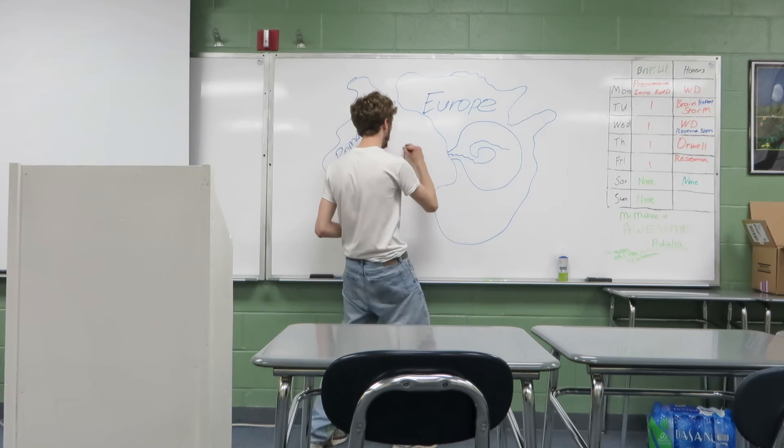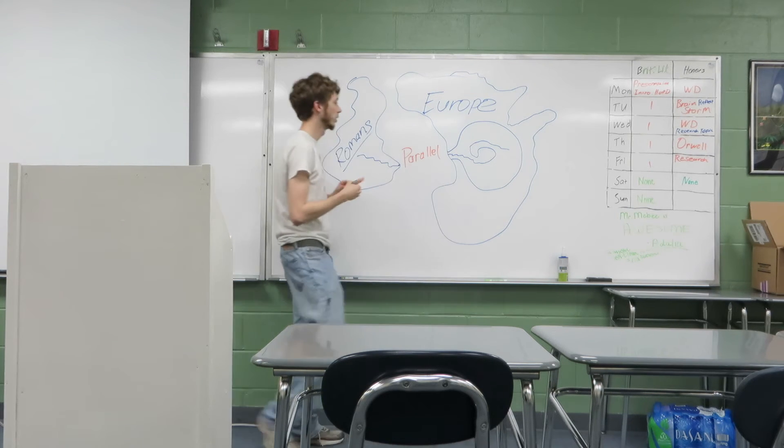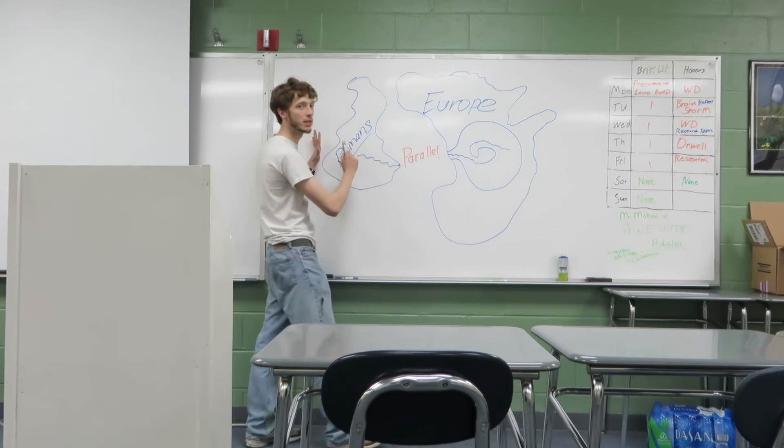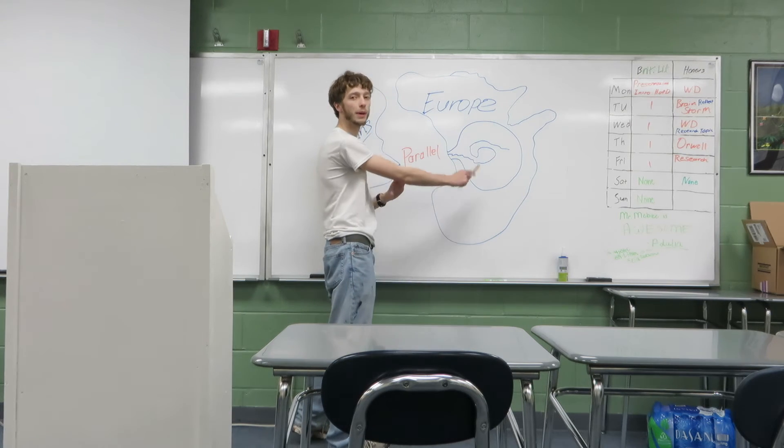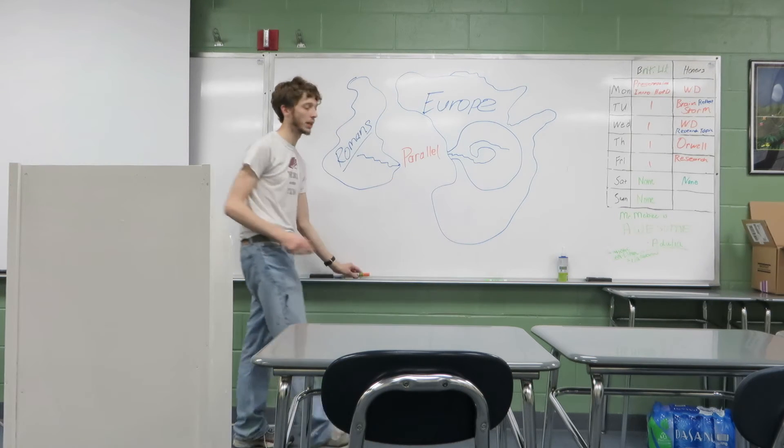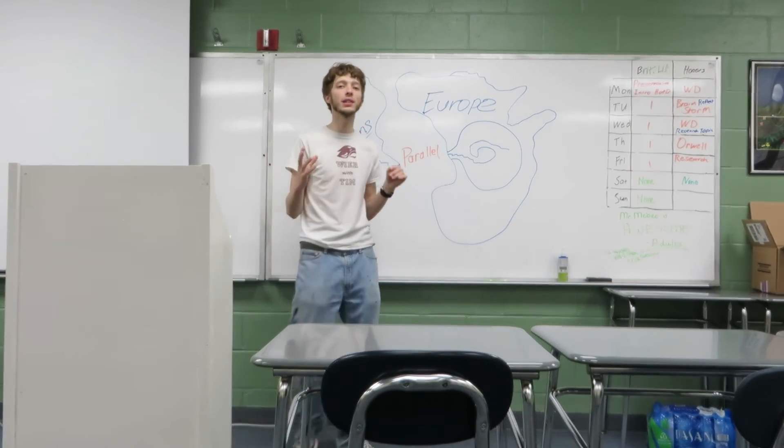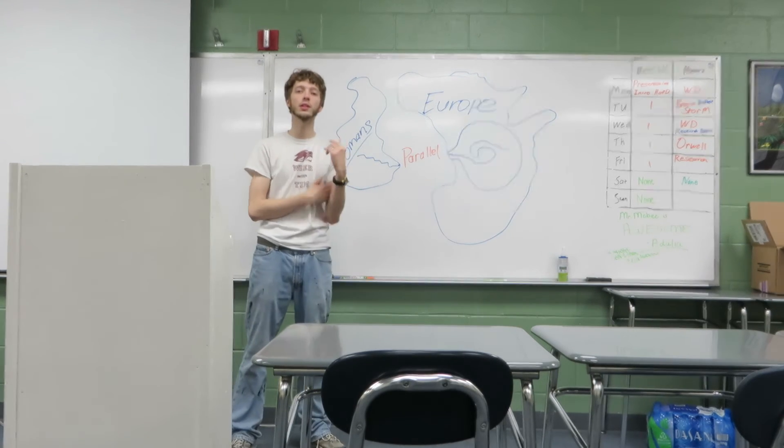So this right here is what we call a parallel, right? Between the Thames and England where the Romans civilized and the Democratic, or I'm sorry, that's what it's called now, the Belgian Congo and Africa where the Europeans civilized. Okay, so we got that much so far. So what is he talking about? Why is it that there's two millennia separating this? Well, there's a couple of theories to that.